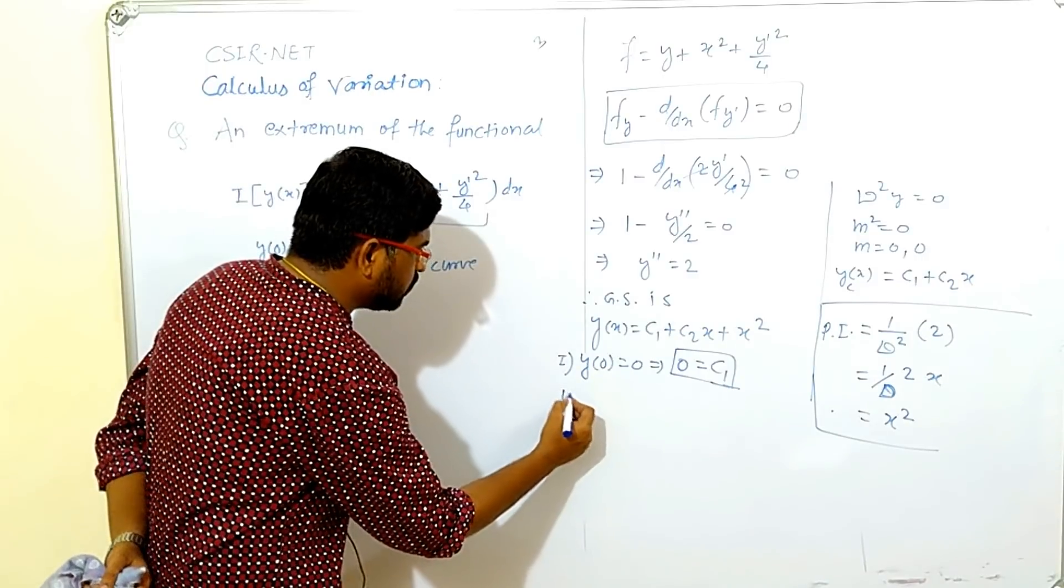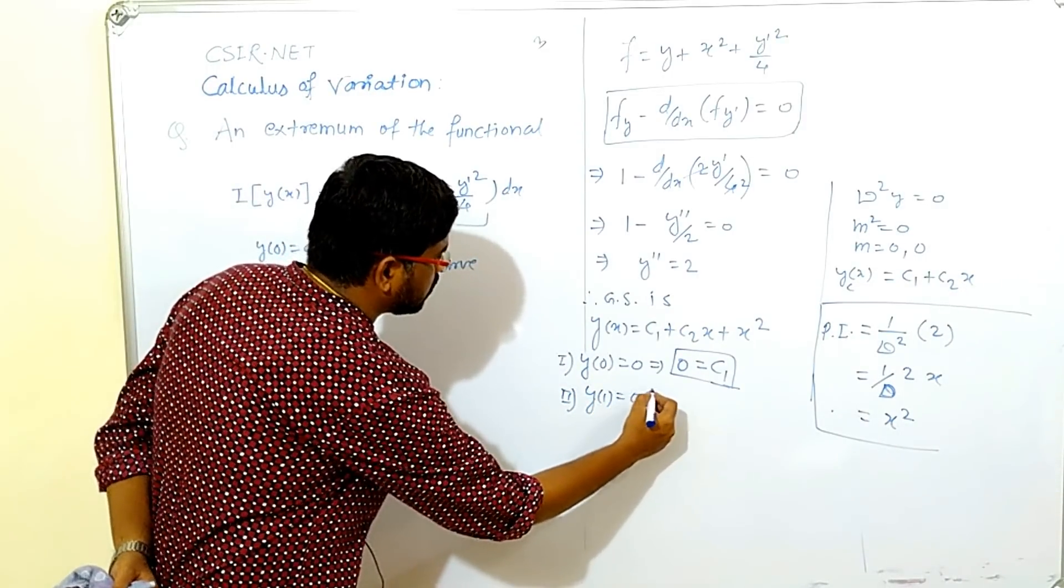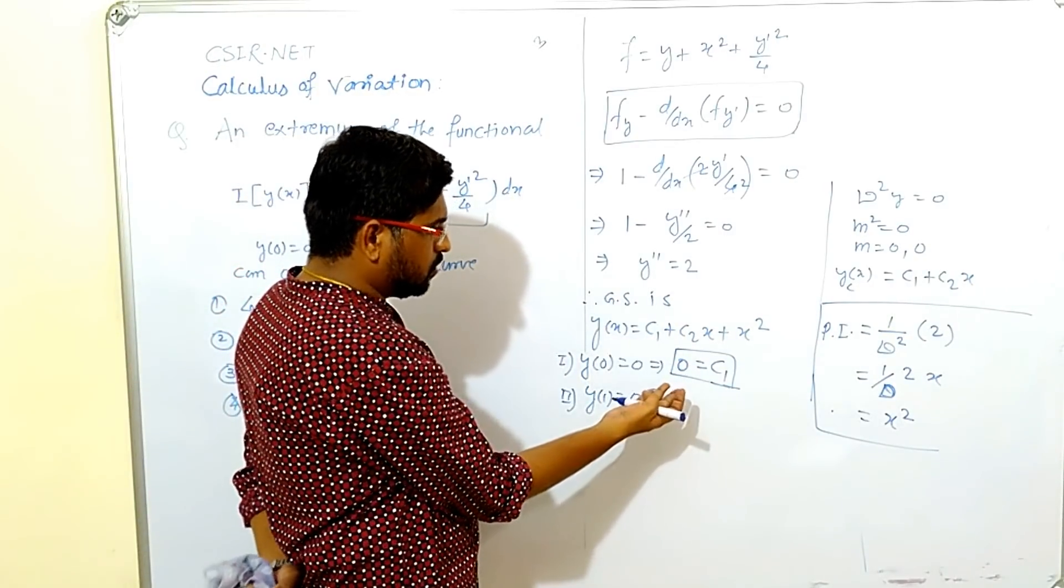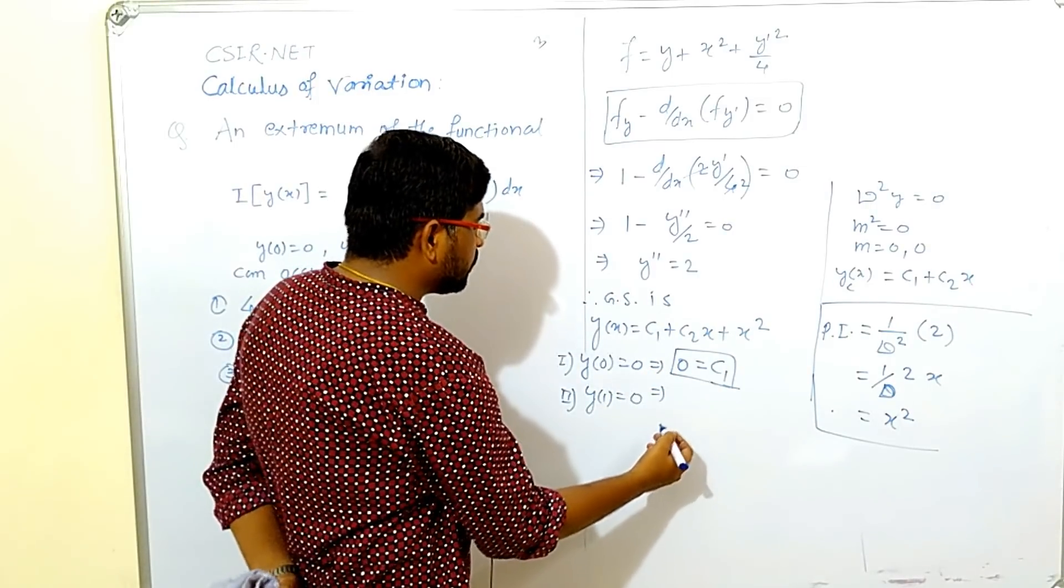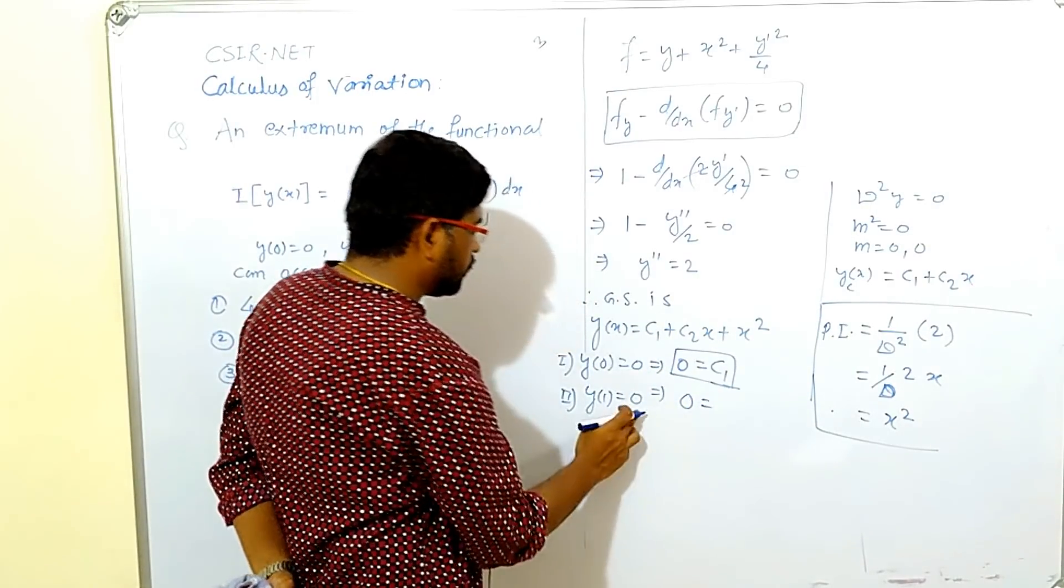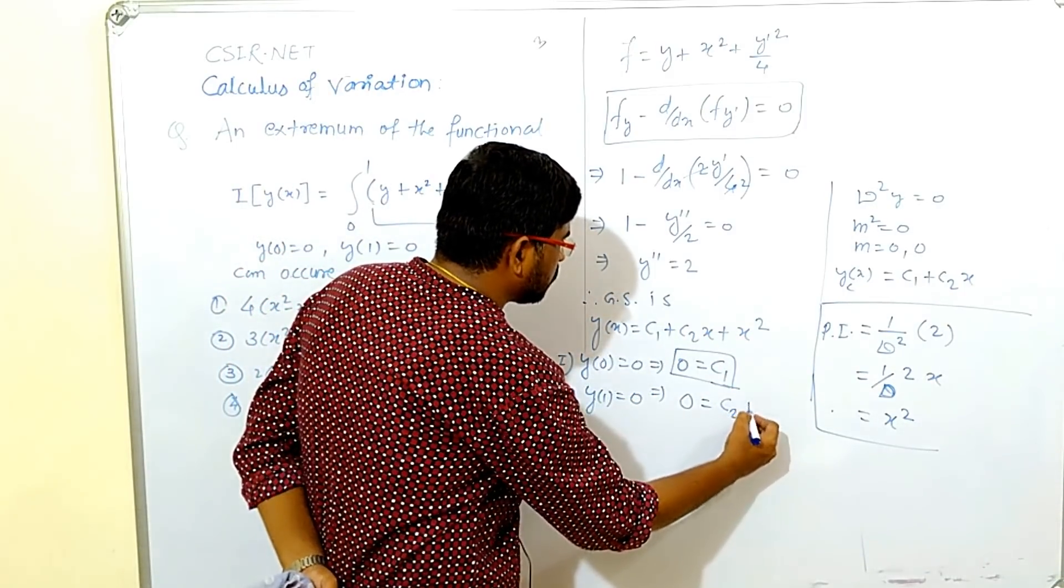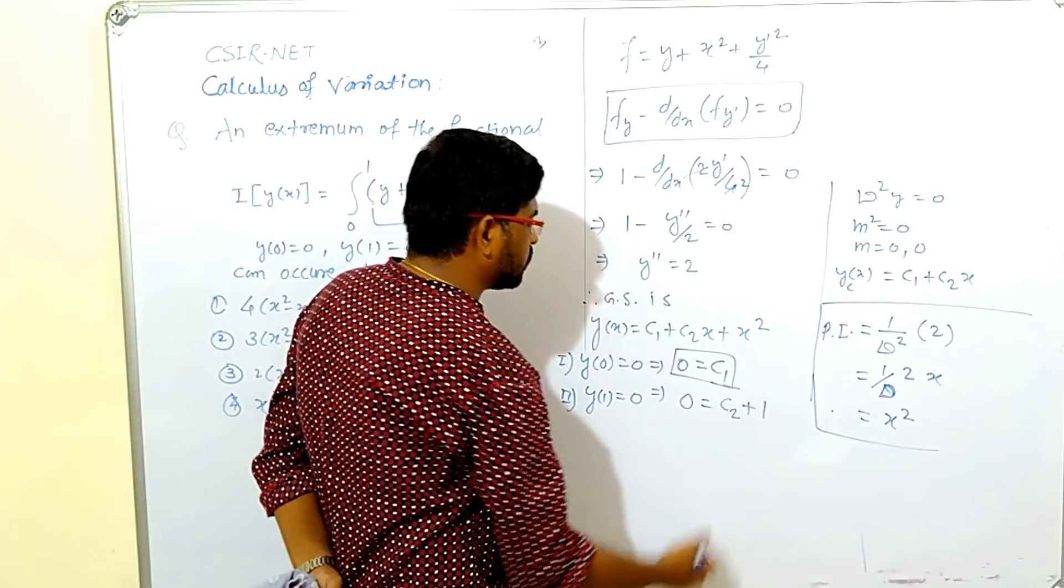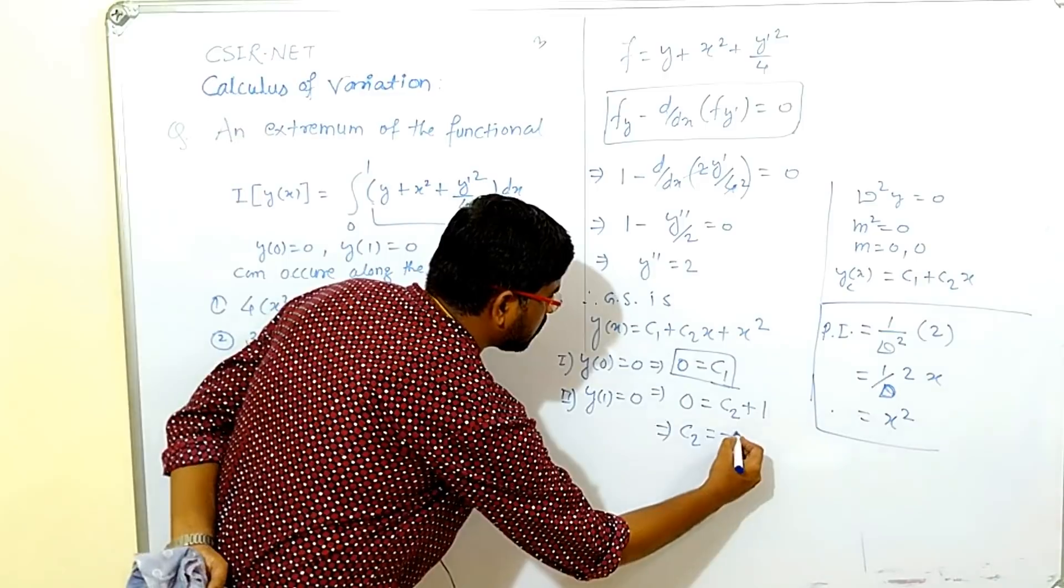c1 equals to 0 and if I use second condition y of 1 equals to 0 implies y of 1 equals to 0. Now c1 equals to 0 already we have so we don't need to write c1 again but y equals to 0 whenever x equals to 1. Here we get c2 plus x is 1 so 1 square is 1 and from this we get c2 equals to minus 1.